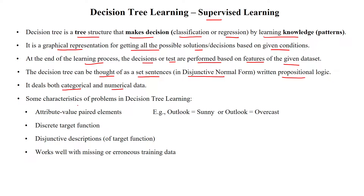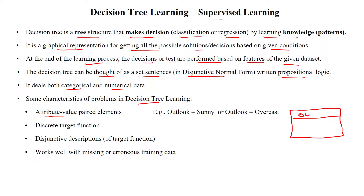Some characteristics of problems in decision tree learning: it always has the attribute and value pair. The table may have a set of attributes. For example, if the attribute is 'outlook', it may have different values like 'sunny' for one record.